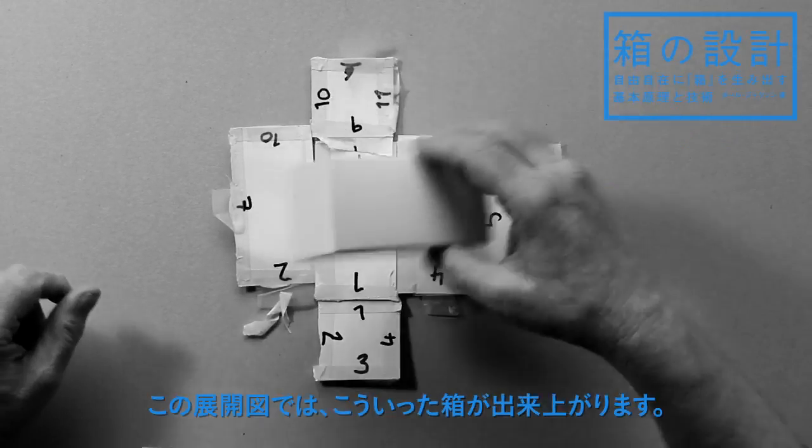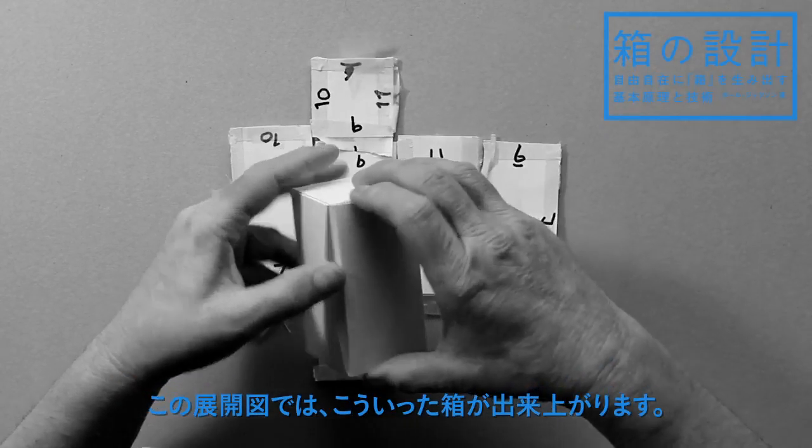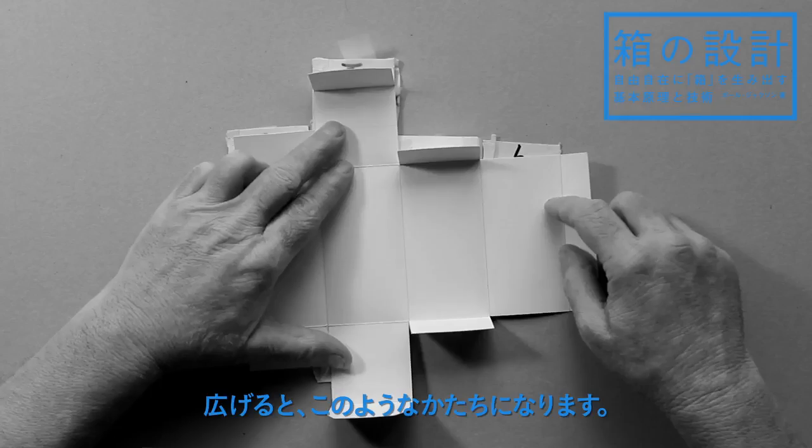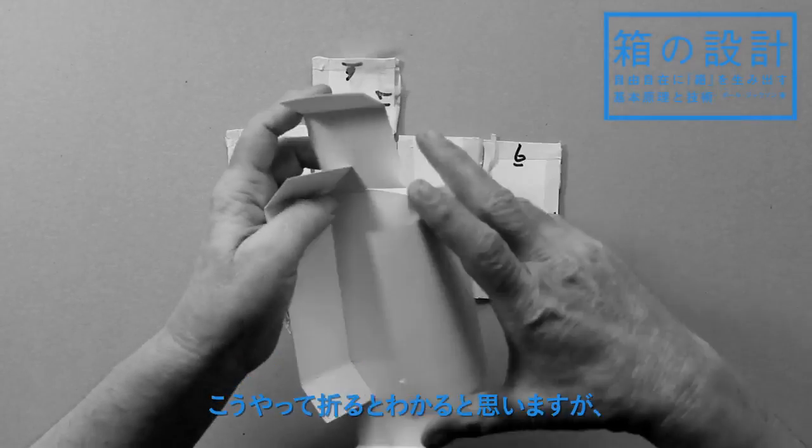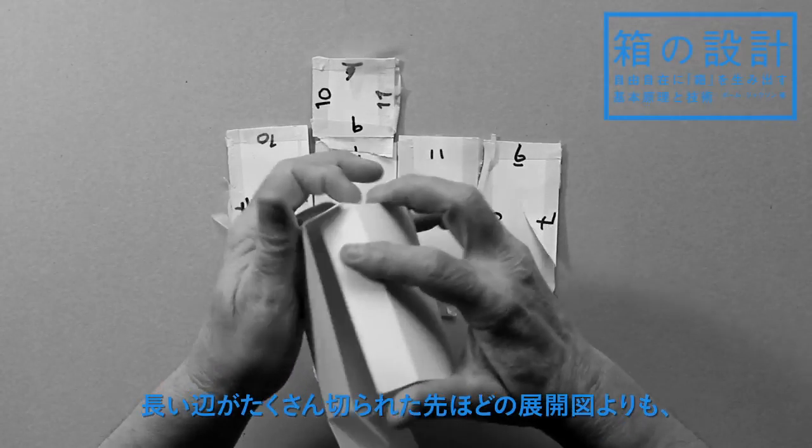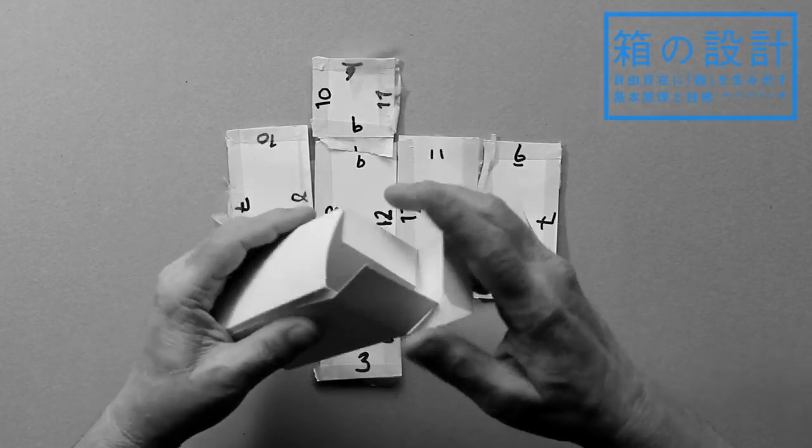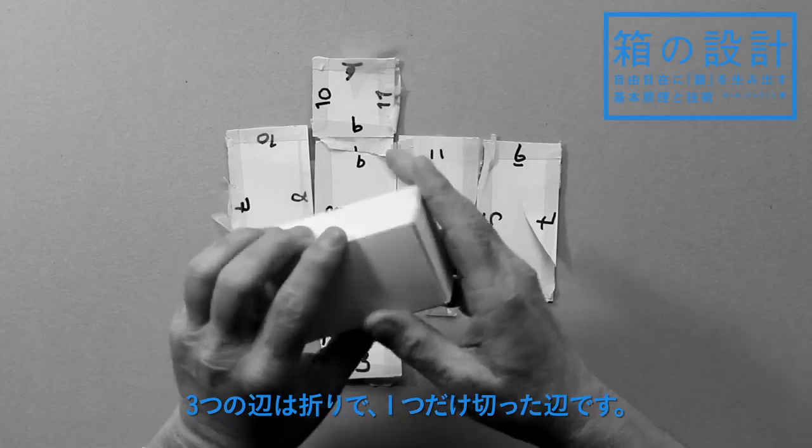So from this net we can now go on to make a box like this, which unfolds like that. And you can see that when we fold it back up that it's much stronger than it would have been with lots of long edges cut. Now three of the four edges are folded.